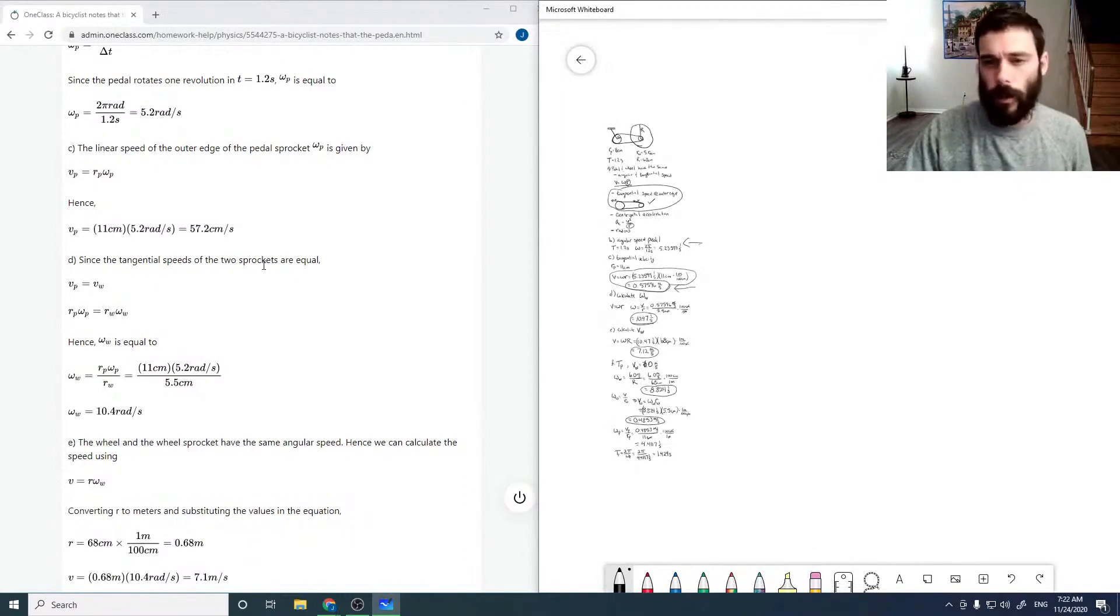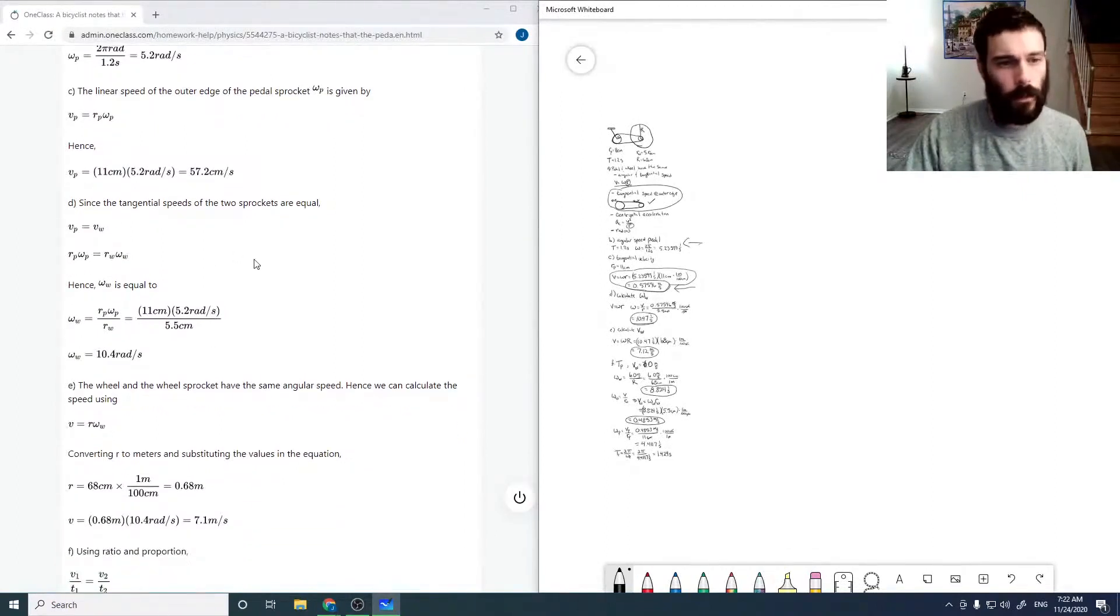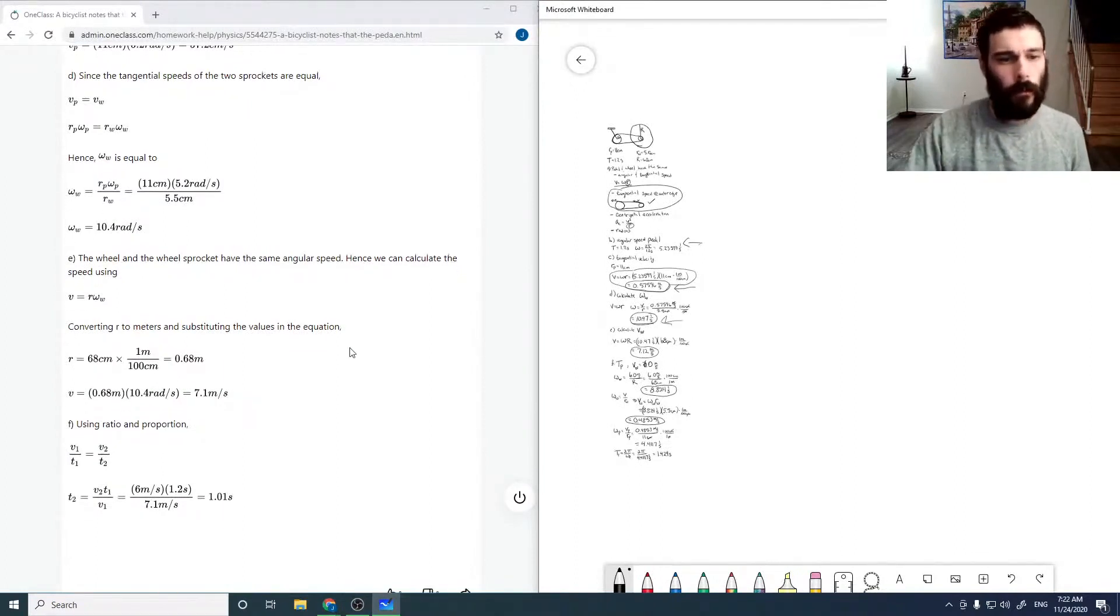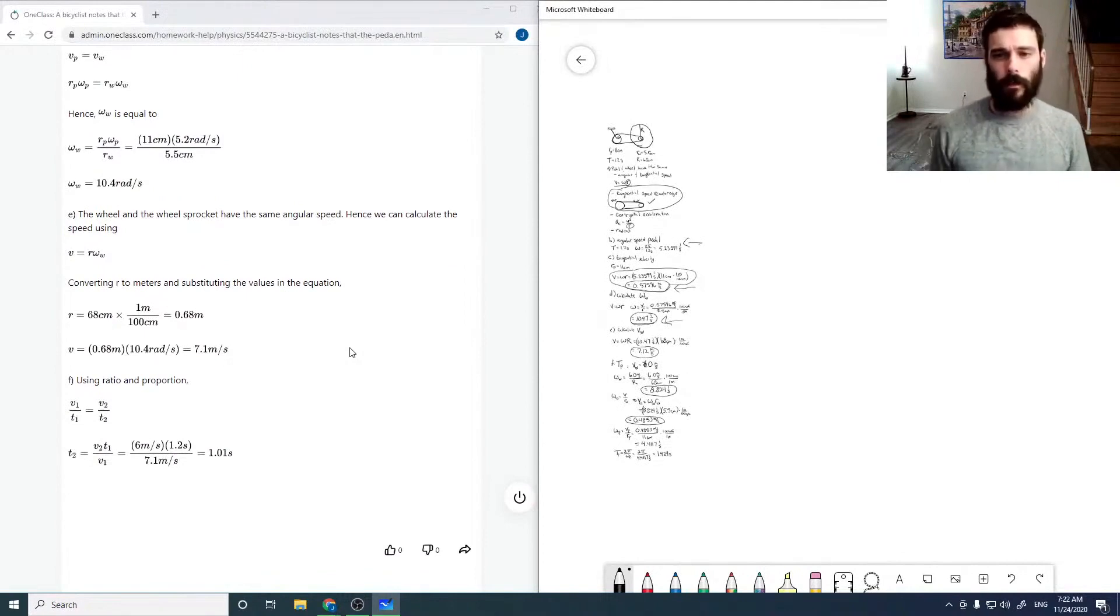Since the tangential speeds are equal, we can use this to calculate our omega for a wheel, which comes out to be 10.4 rads per second. So that's there. Converting our meters and substituting in the values, we get a speed of 7.1, so that looks good.